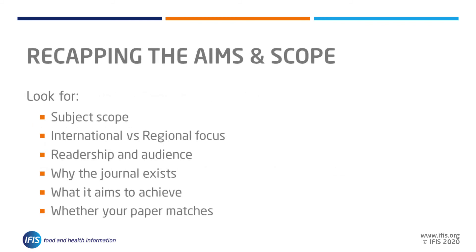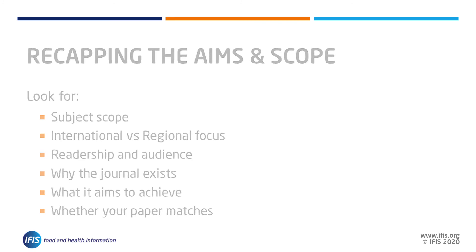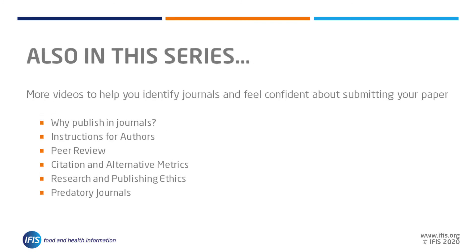Making note of all these features of each of your journals of interest and carefully matching your paper will give you a better chance of choosing the most appropriate journal first time. Be sure to watch the rest of the videos in this series for more information on understanding instructions for authors, peer review, journal metrics, research and publishing ethics, and predatory journals.